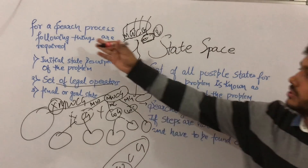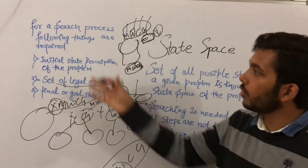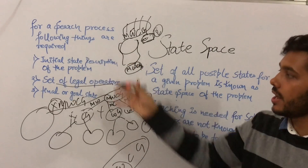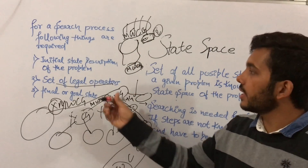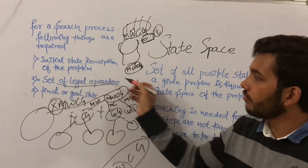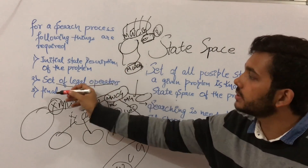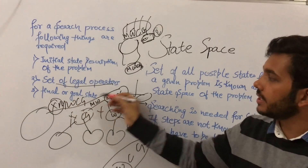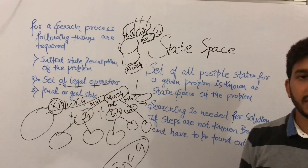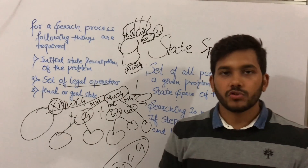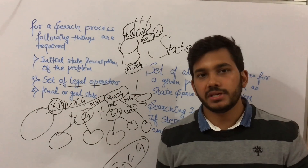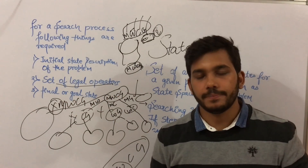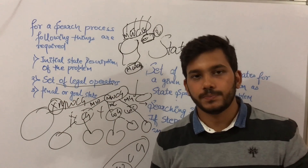So for a search process, three things are required: one, the initial state; two, the set of legal operators; and three, the final or goal state. If you liked this video, please like, comment, and subscribe. Thank you.